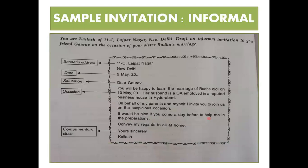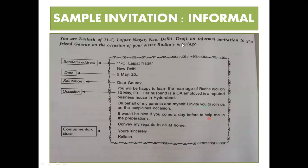The question here: you are Kailash of Class 11C, Large Part Nagar, New Delhi. Draft an informal invitation to your friend Gaurav on the occasion of your sister Radha's marriage. See the sender's address, the date, and the salutation 'Dear Gaurav' — the occasion is kept in the paragraph.